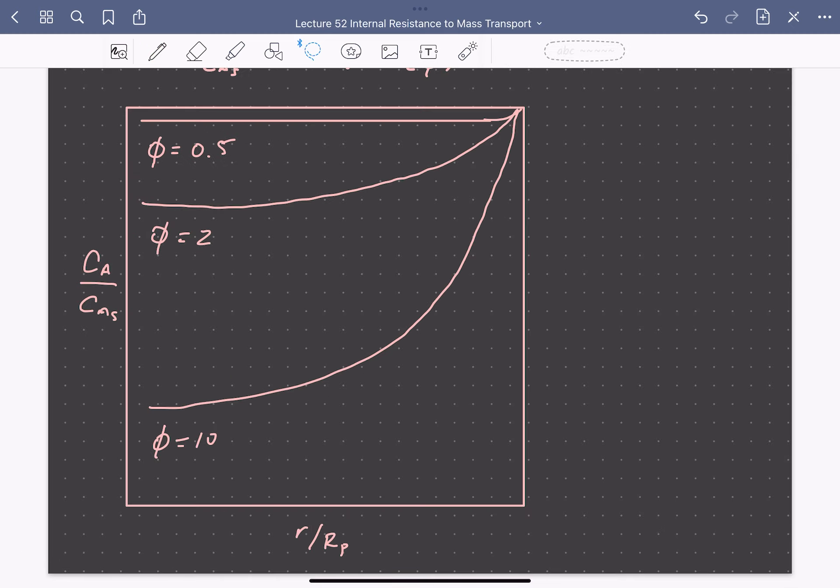So it's useful to plot the concentration profiles through the pellet at different values of the Thiele modulus to see its physical significance. So here it's clear that the Thiele modulus indicates which process is rate limiting. When the Thiele modulus is low, so in this top trace, the diffusion is fast relative to reaction, and consequently the concentration through the particle can be maintained very close to the surface concentration.